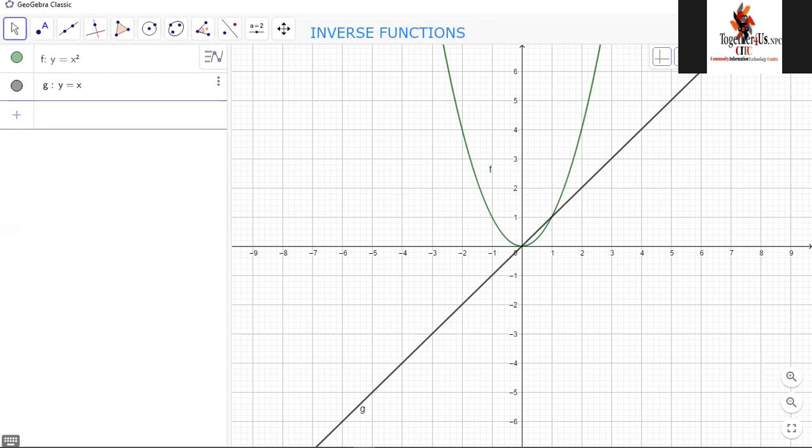So what I'm gonna do here, I'm gonna reflect this graph, the parabola, about this line. This is the line y equals x. The line y equals x has a positive gradient and it passes on the origin. And so the line y equals minus x will also pass through the origin, but will have a negative gradient.